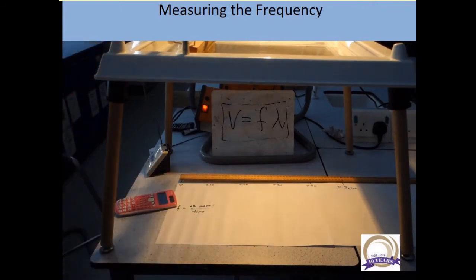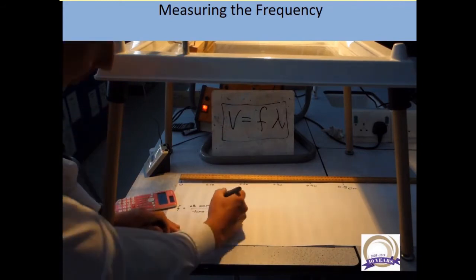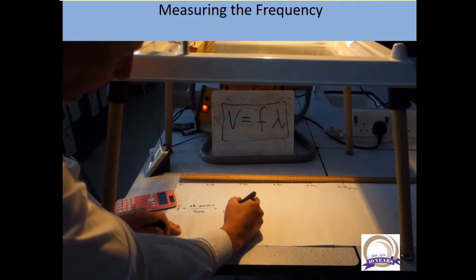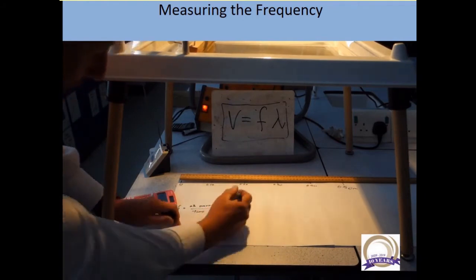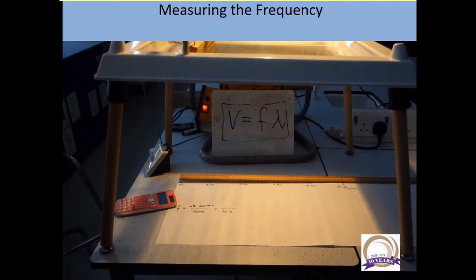So what I'm going to do is, to make life simple, I'm going to time 10 seconds. And then I'm going to get the number of waves that I can get reaching the other side in 10 seconds and divide that by 10.